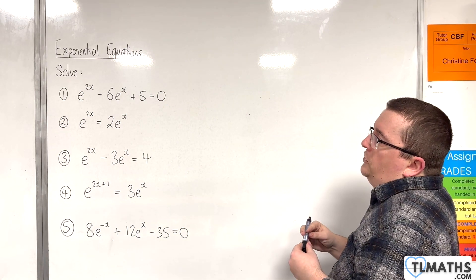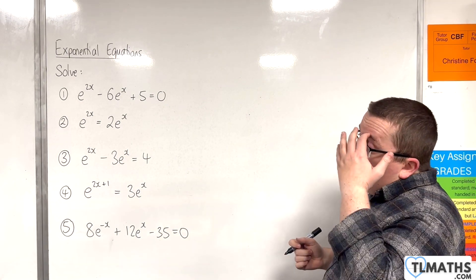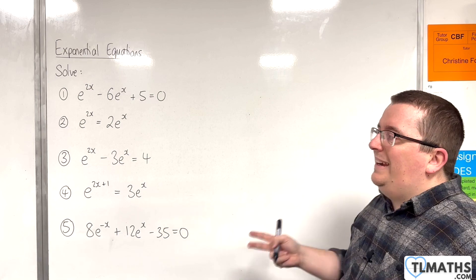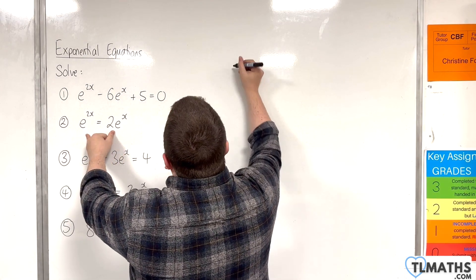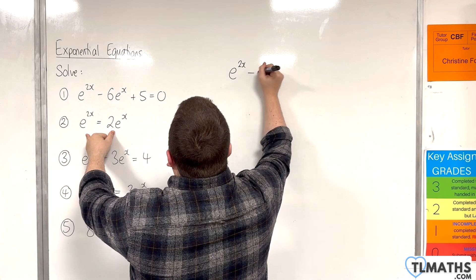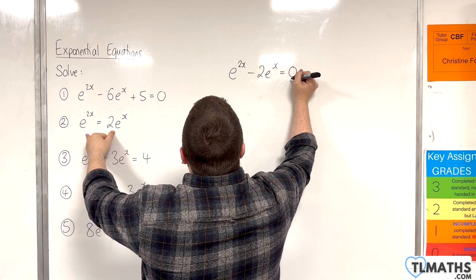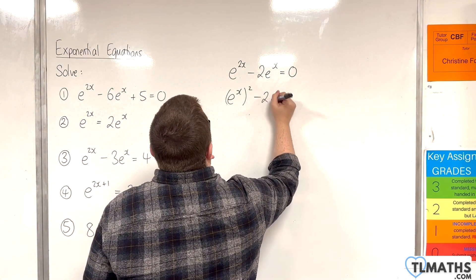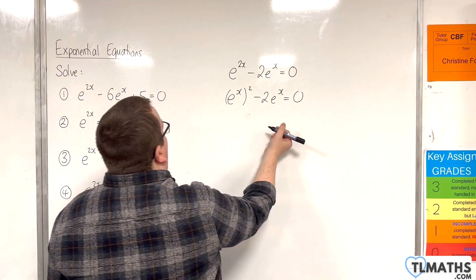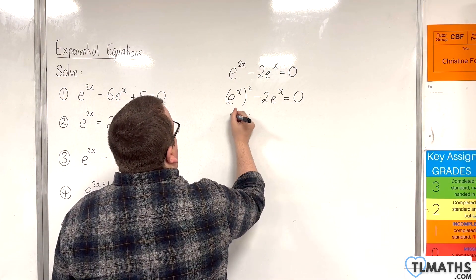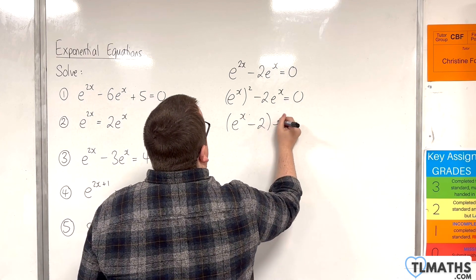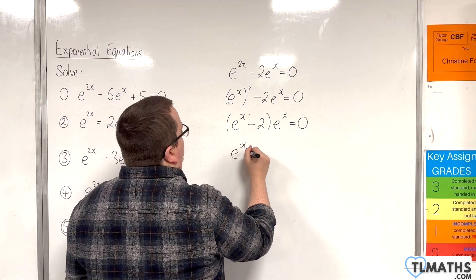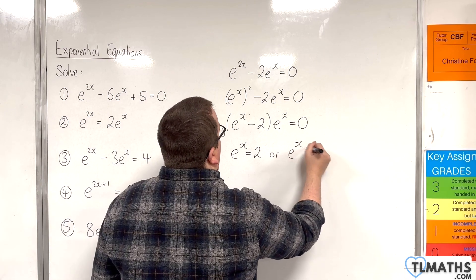Number 2: e to the 2x is equal to 2e to the x. I'm going to do this in two different ways. The first way is to rearrange it to get e to the 2x take away 2e to the x equals 0. Now e to the 2x is of course e to the x all squared, and the left-hand side factorises to e to the x, times e to the x take away 2, equals 0.